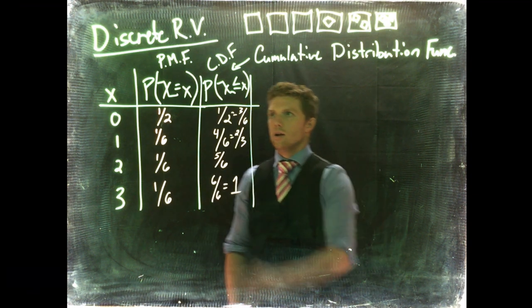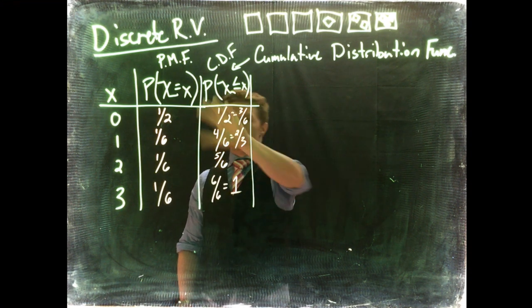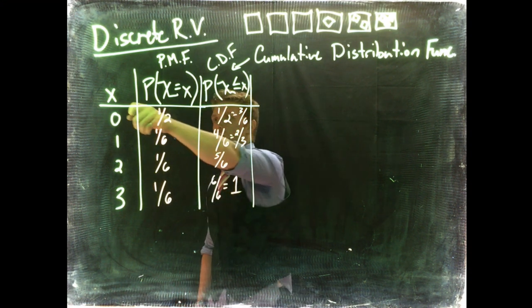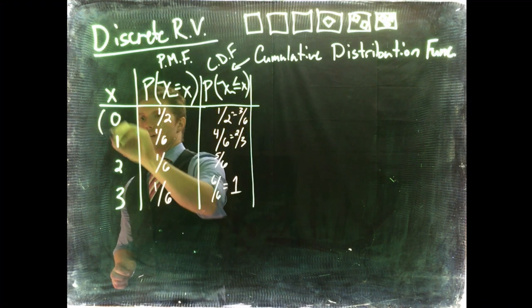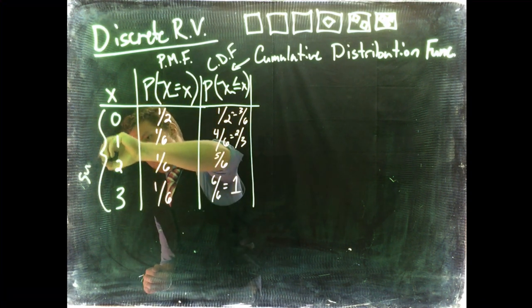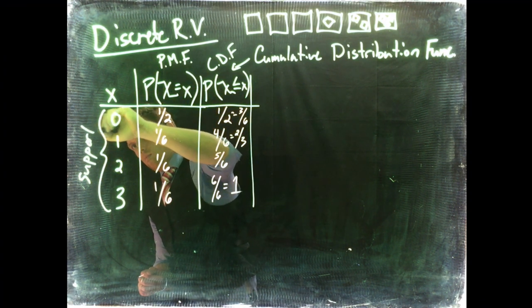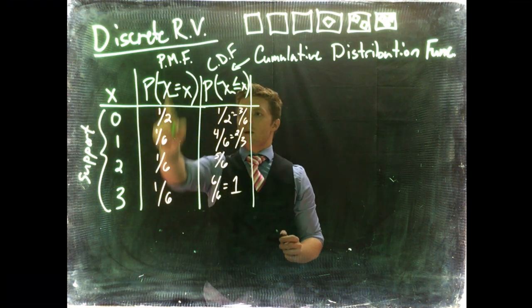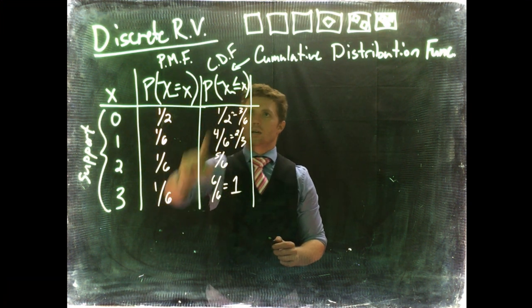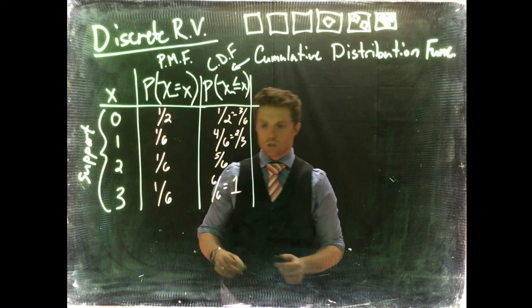So this is our discrete random variable. This is our kind of table of our support. Let me write that down again. This is our support. This is our probability mass function. This is our cumulative distribution function.